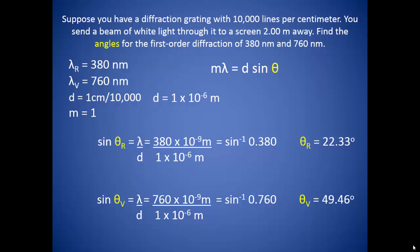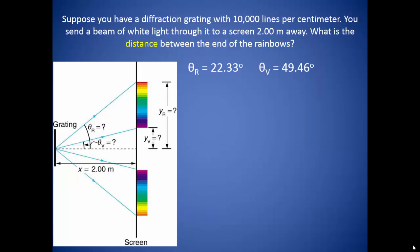Notice at this point that the waves of white light coming in are not being bent in the same manner for the entire range. The light is being separated out into different colors. So what is the distance between the ends of the rainbows that are produced?